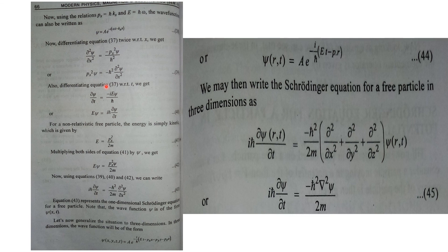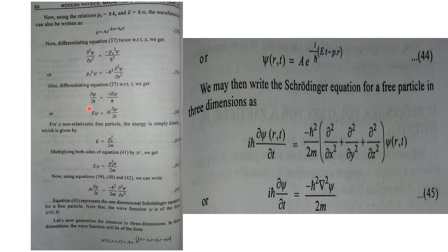We can also differentiate equation 37 with respect to time. So dψ/dt equals minus iE·ψ/h-bar. Cross multiplying gives E·ψ equals h-bar divided by (minus i) times dψ/dt. Multiplying and dividing by i — since i times i gives minus 1, and there is already a minus — that becomes positive. Hence, E·ψ equals i·h-bar times dψ/dt.